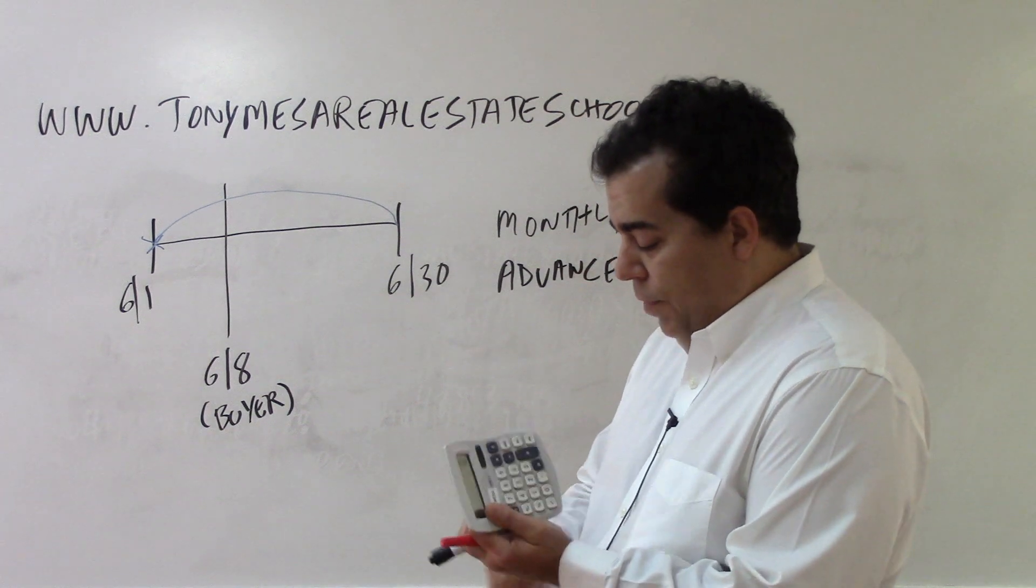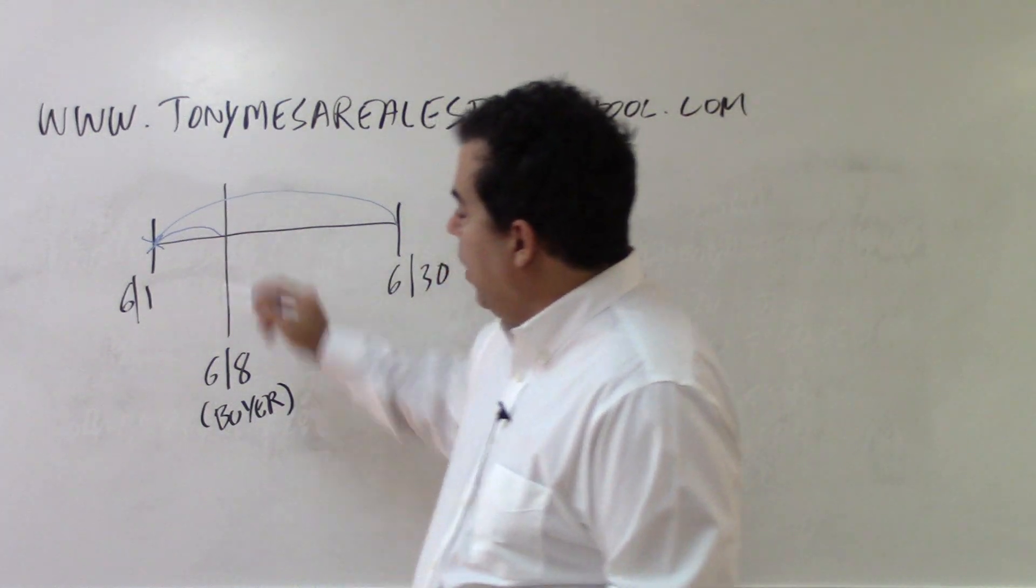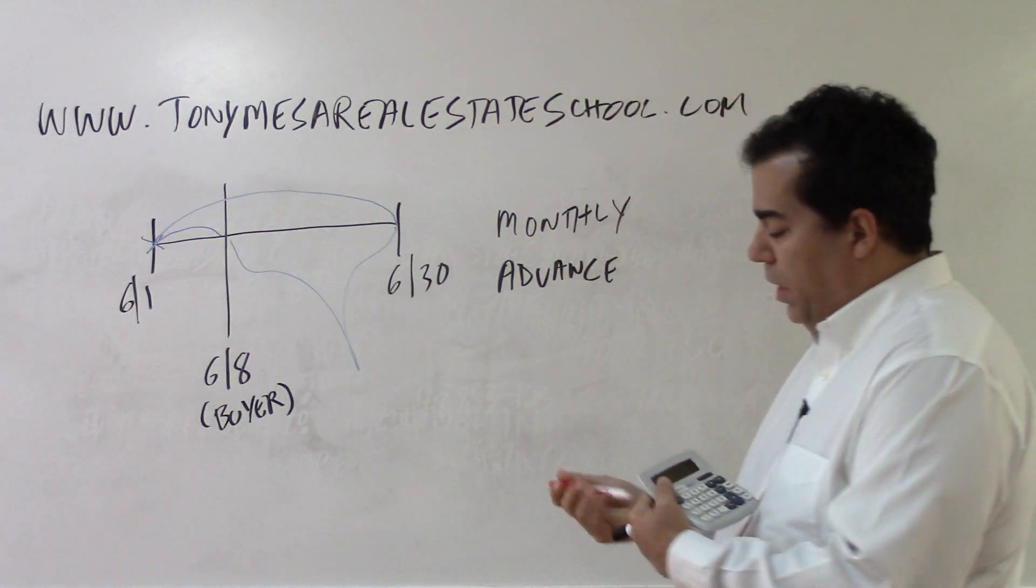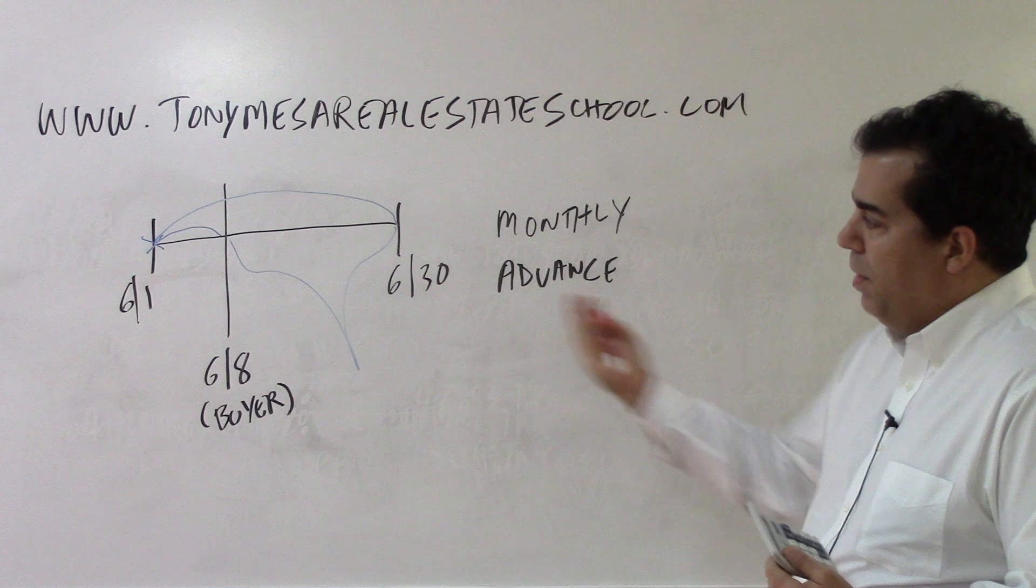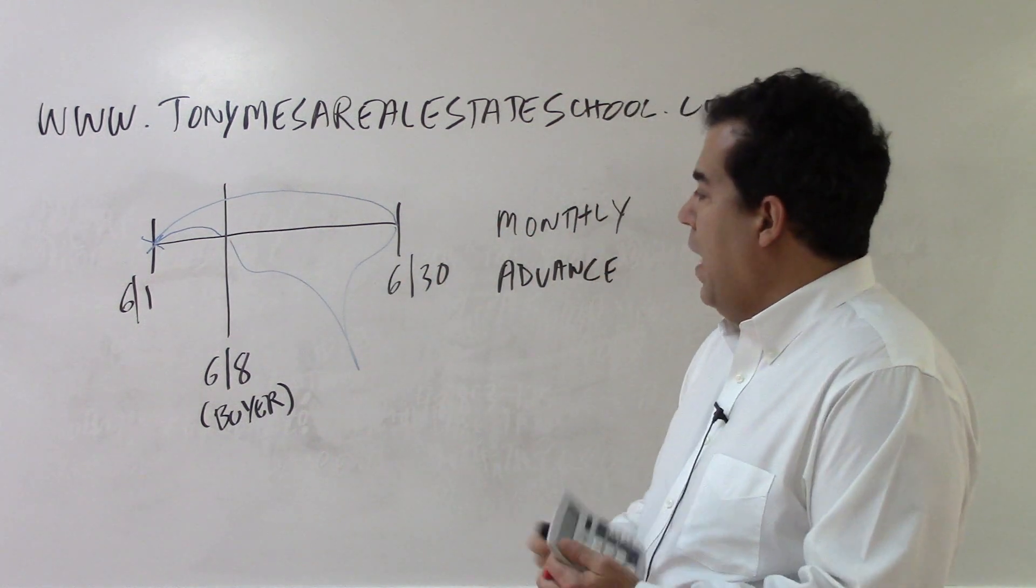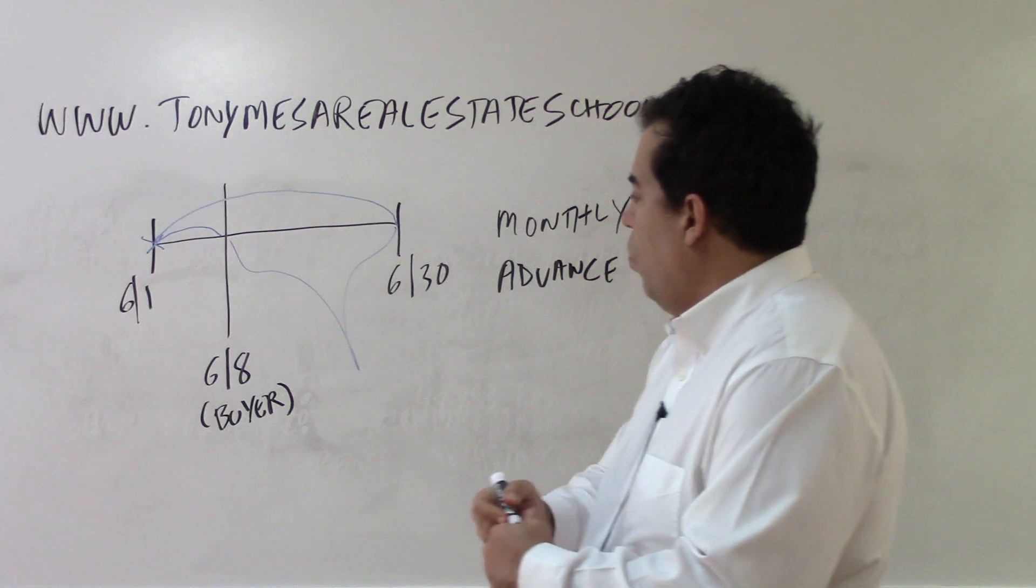So on this day the seller got everything, and the seller should be entitled to this part over here because they owned it here. But this part over here, this should go to the buyer. That should be something that the buyer receives the benefit of because the buyer owned it for this part of the month.